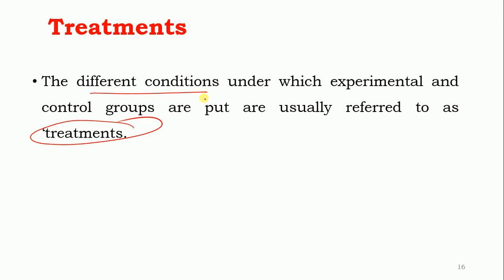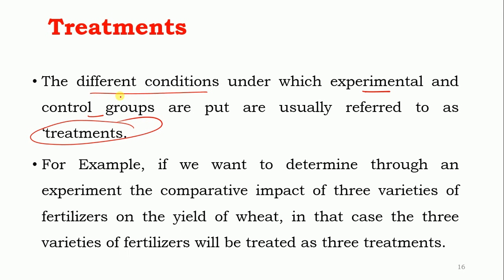For example, if you want to determine through an experiment the comparative impact of three varieties of fertilizers on the yield of wheat, the three varieties of fertilizers are treated as three treatments. So when two groups are put into different conditions, that is called treatment. The fertilizers themselves are called treatments for the research.